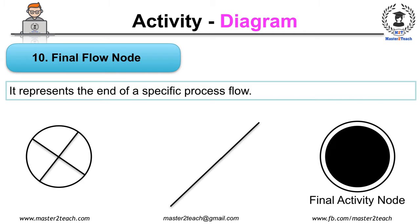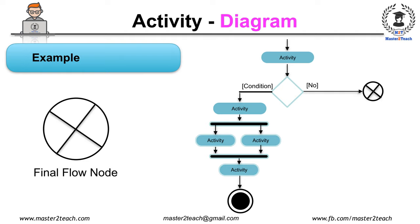The difference between final activity and final flow node is that the flow final node denotes the end of the single control flow, whereas activity final node denotes the end of all control flows within the activity.